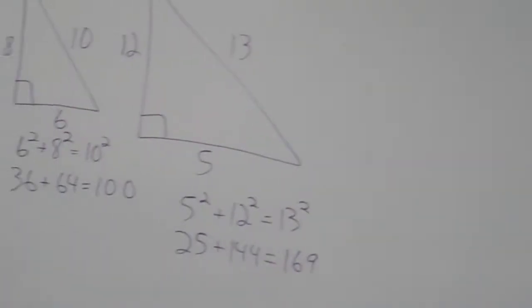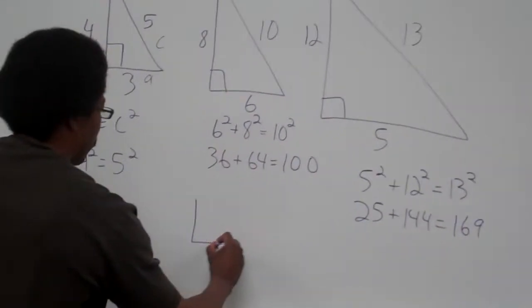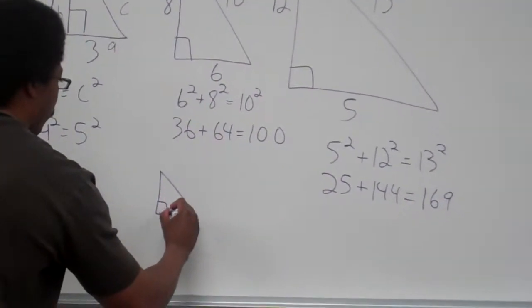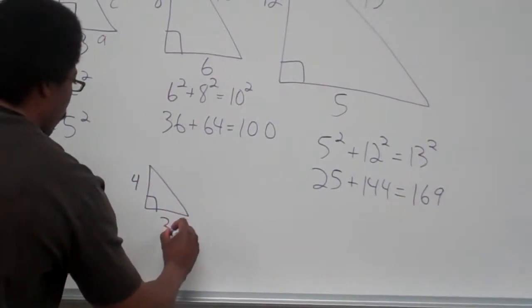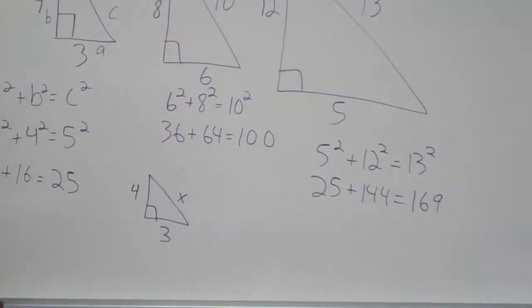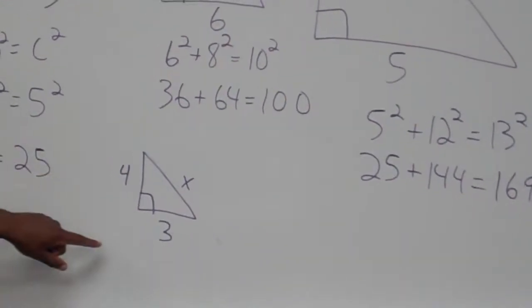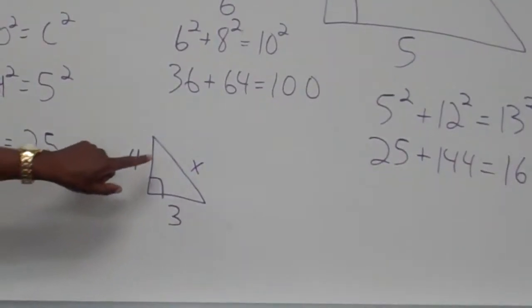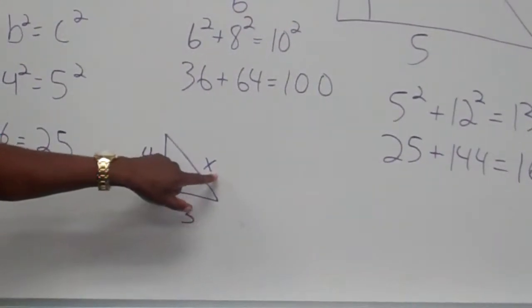Now, the reason why I show you all this is because on a test, you would see something written like this. You'd have to figure out X. For here, it's easy. We know that this is a 3, 4, what's missing here? 5. It's a 3, 4, 5 triangle, so X would equal 5.